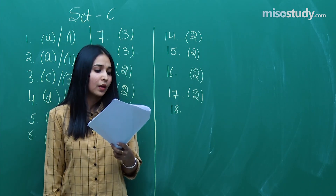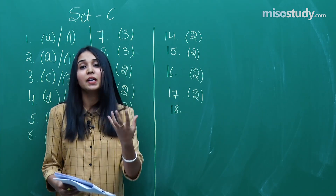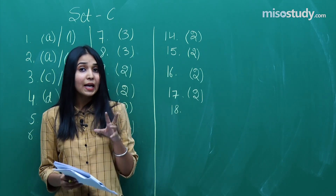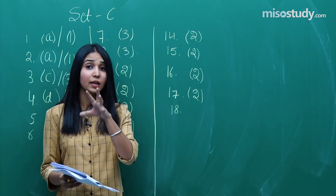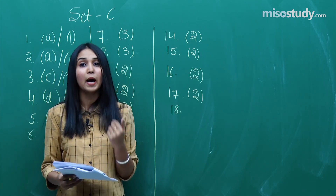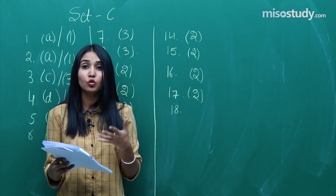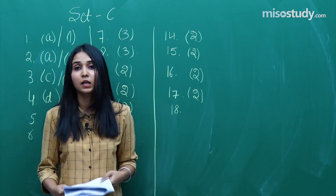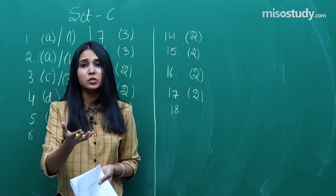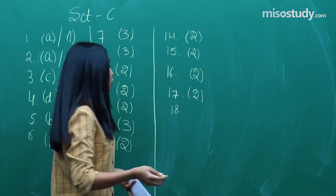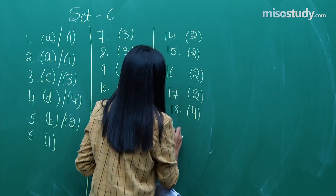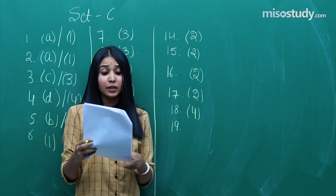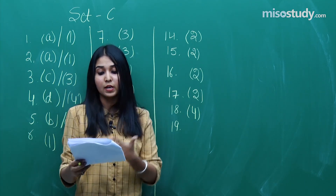Question number 18 was from biomolecules. We don't usually expect many questions from this section, but in the last two or three years they have been picking up questions from biomolecules. It was mostly the cramming part, and based on direct reactions you would have done this. The answer for question 18 is option 4.